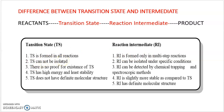Another point: the transition state cannot be isolated, but the reaction intermediate can be isolated under specific conditions. The transition state is highly unstable with very high energy, making it impossible to isolate from the reaction mixture. Reaction intermediates are relatively more stable and less energetic compared to transition states, so we can isolate them under specific conditions.